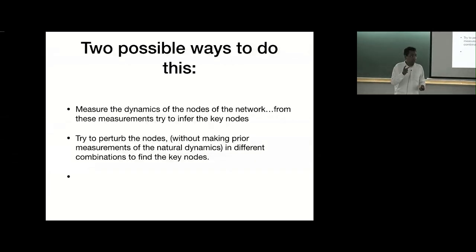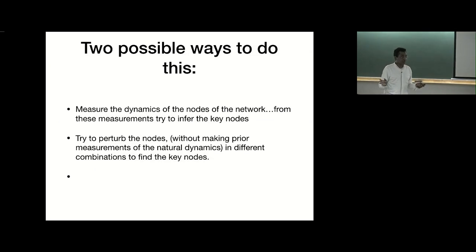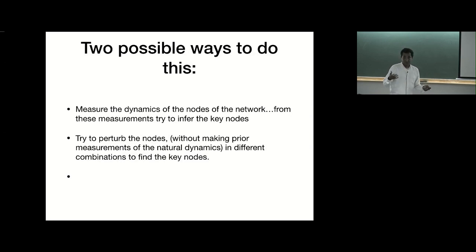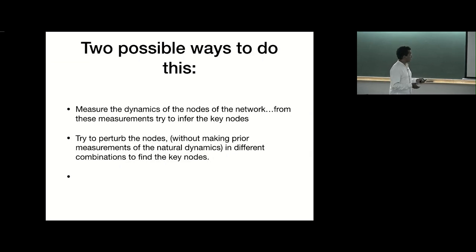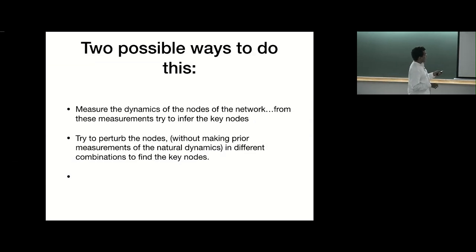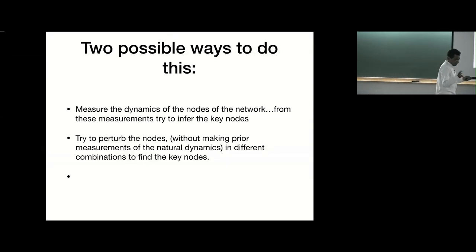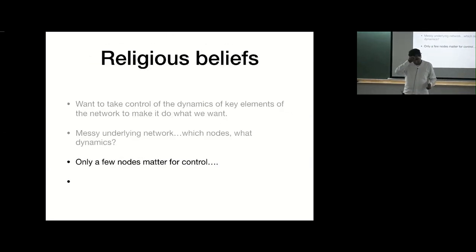We've been trying to do this in two ways. One is to measure everything and then do some profound data analysis to see if we can figure out which buttons to push. The other is to not bother measuring anything and do perturbations intelligently to find the key nodes. I'll tell you about both approaches — the first in terms of development, the second in terms of C. elegans. And even without taking control, if I could get an order parameter — read the mind of the animal or cell precisely — I could make profound advances anyway.